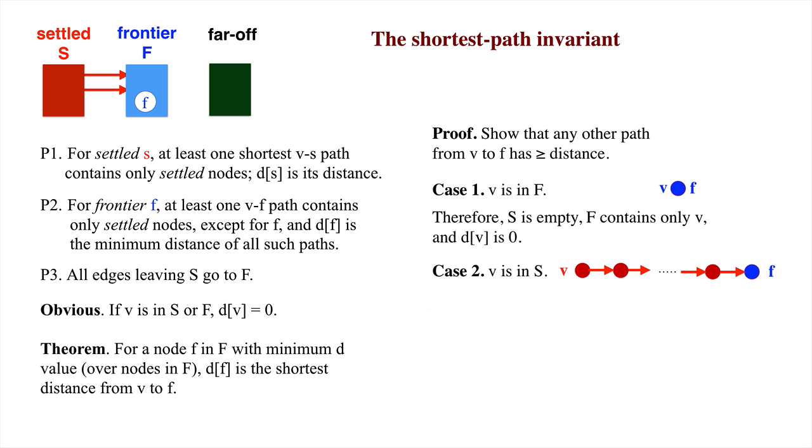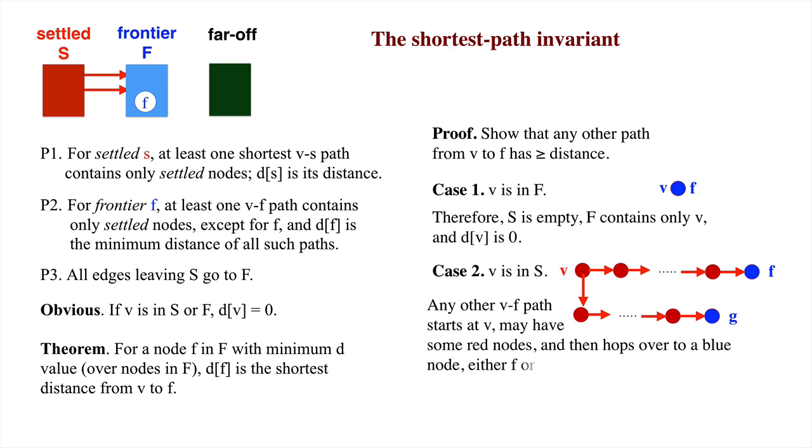Consider any other path from v to f. It starts at v, goes through settled nodes, and visits f or another frontier node, g. If it visits f, then we know that the path distance is at least d sub f, and that case is taken care of. Suppose it visits another frontier node, g.